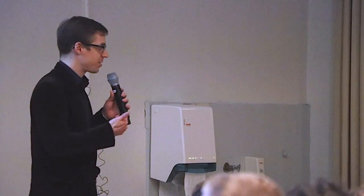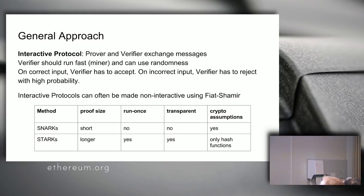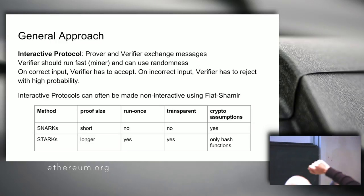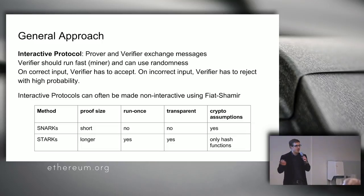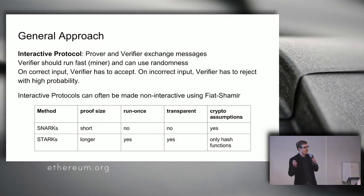The benefits of STARKs are: no trusted setup, quantum resistance, and transparency. SNARKs also make assumptions about knowledge of exponent which might just turn out to not be true. The run-once setup and transparent property are the same thing — in SNARKs there's an initial setup that generates certain data reused for every transaction. STARKs are mainly longer because of interaction, Fiat-Shamir, and Merkle proofs. Eli Ben-Sasson is confident that can be considerably improved.